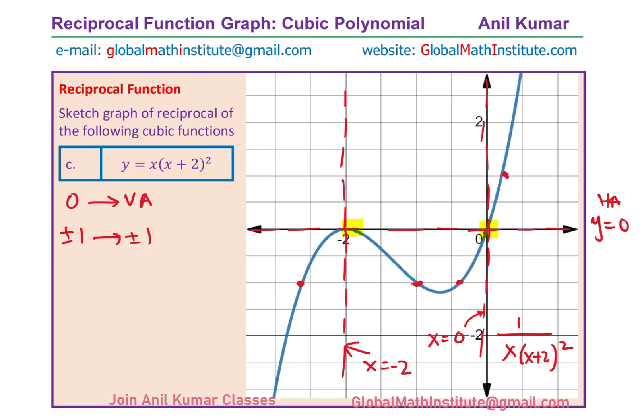Now sketch the graph joining these points. From the left, the curve goes toward the negative side, approaching the vertical asymptote. Negative reciprocal is negative; positive reciprocal is positive — simple as that. Always remember: reciprocal of positive is positive, reciprocal of negative is negative, and invariant points are where both graphs share common y values of plus and minus 1. I hope you have understood the whole concept of how to sketch the graph of reciprocal cubic functions.